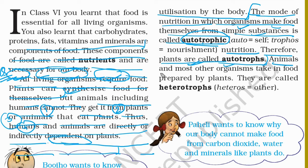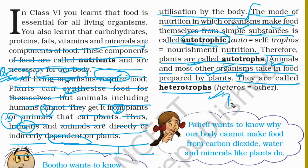Animals and most other organisms take food prepared by plants. They are called heterotrophs. Plants are autotrophs and animals are heterotrophs. The mode of nutrition by which animals get their food is the heterotrophic mode.